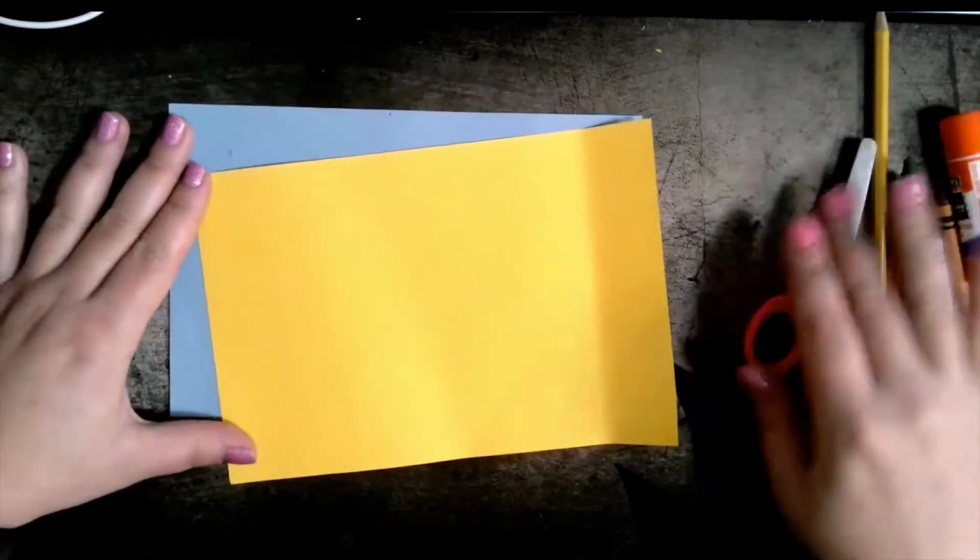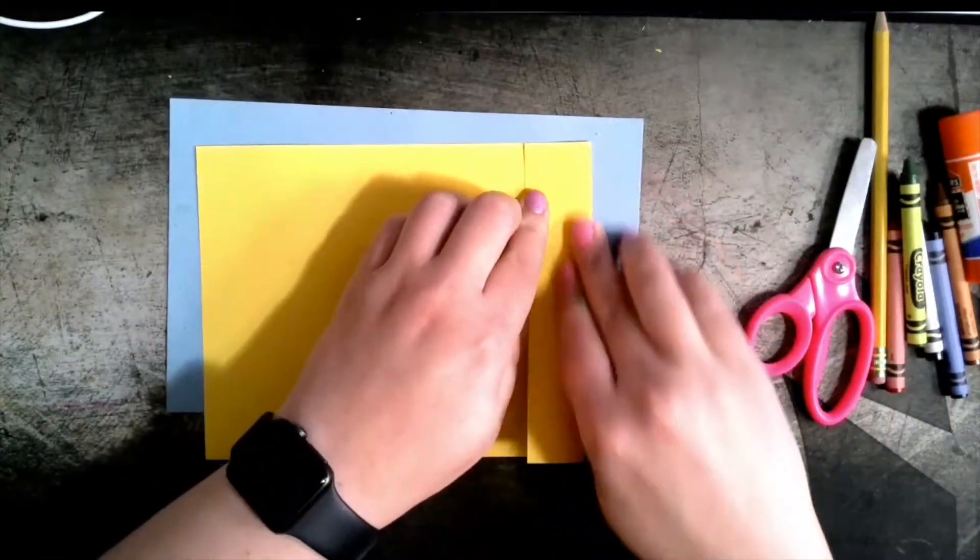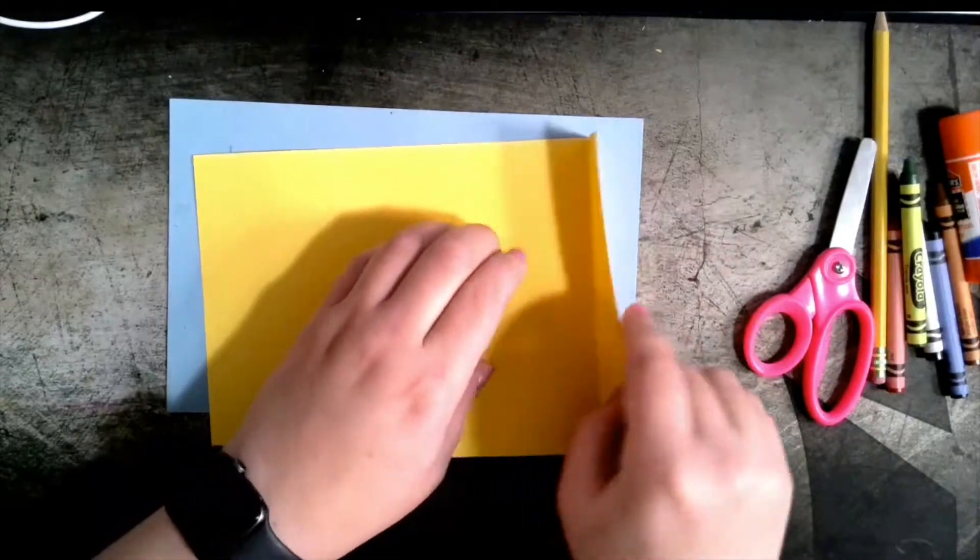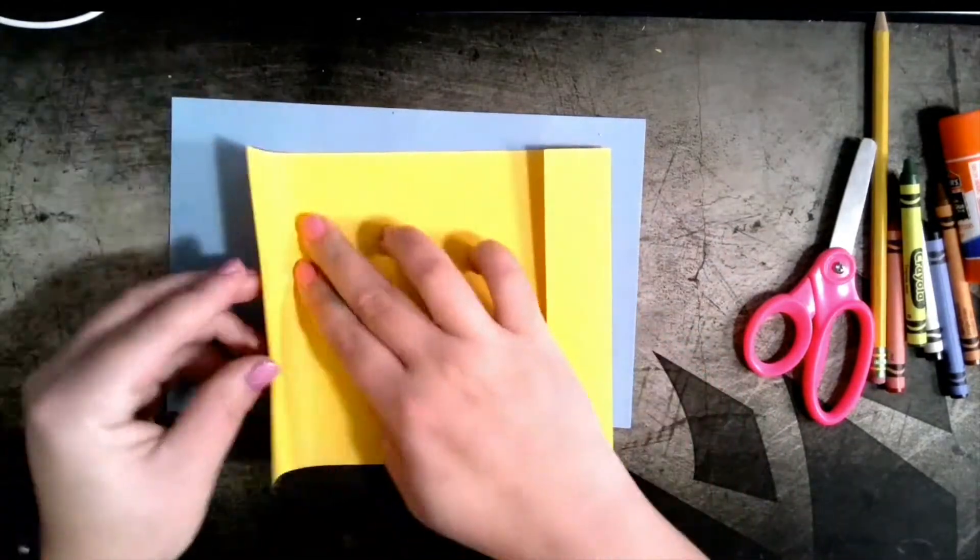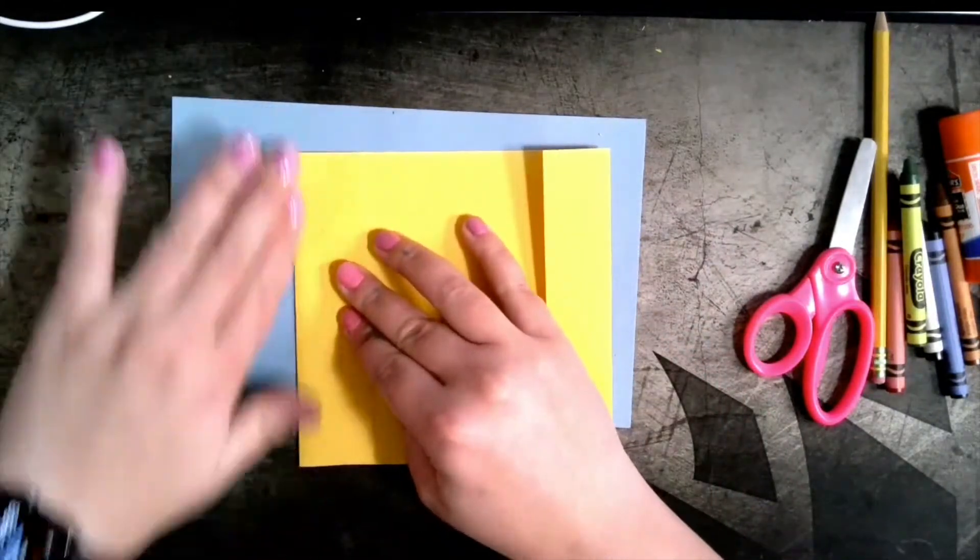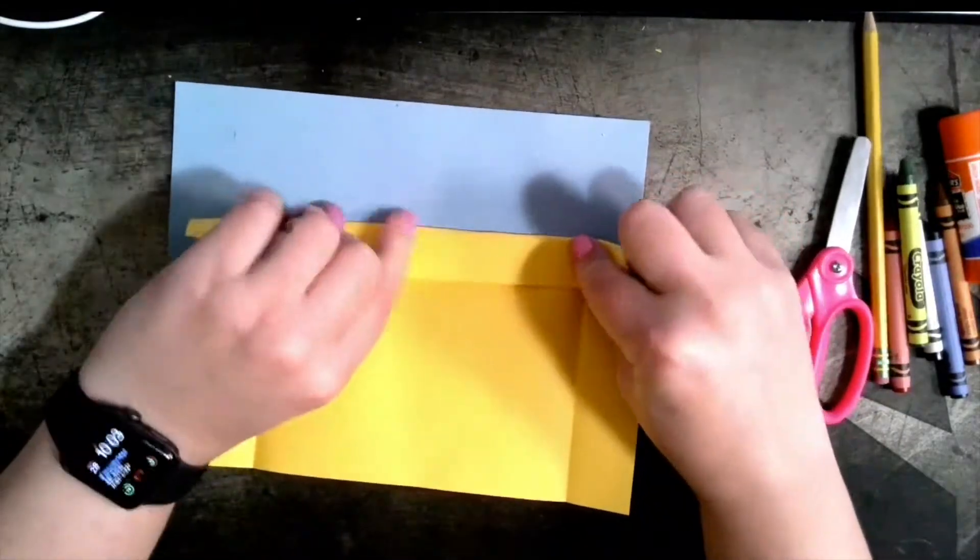We are going to start with the ground by folding in the side about an inch. It's okay if it's a little bit more, it doesn't need to be exact, but then we're going to do the same to the other side and to the top.